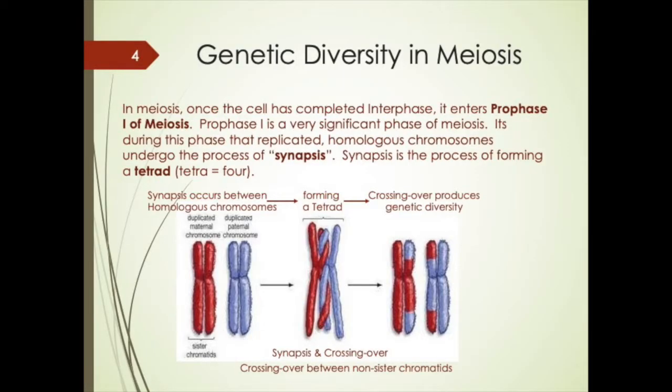In meiosis, once the cell has completed interphase, it enters prophase one. During this phase, it undergoes the process of synapsis. Synapsis is the process of forming a tetrad — two different homologous chromosomes come together. Those homologous chromosomes will start crossing over; they'll become so close together that alleles will start binding and switching between those homologous chromosomes. Crossing over produces genetic diversity.